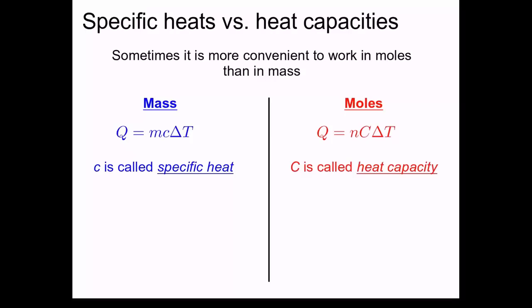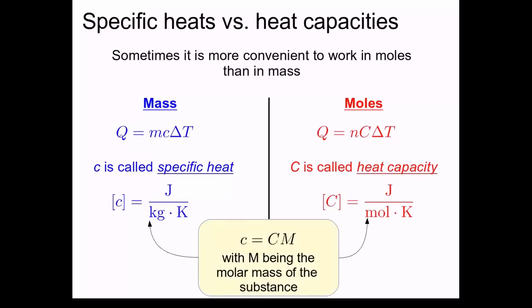The lower case c specific heat that's used for mass has the units joules per kilogram Kelvin. While the capital C heat capacity has the units joules per mole Kelvin. The specific heat and the heat capacity are going to be related by the molar mass of the substance.